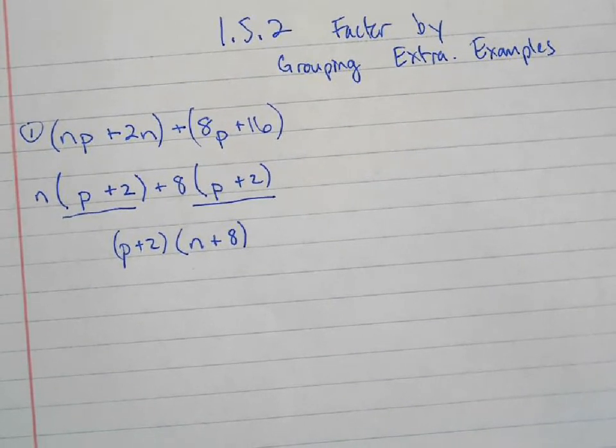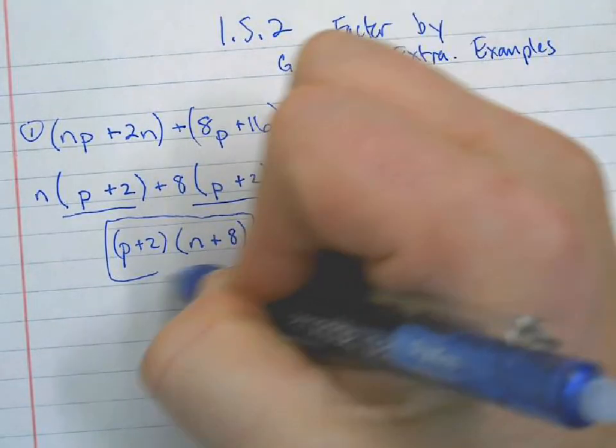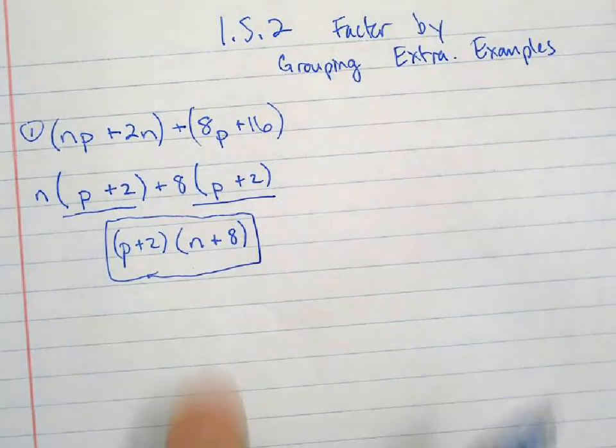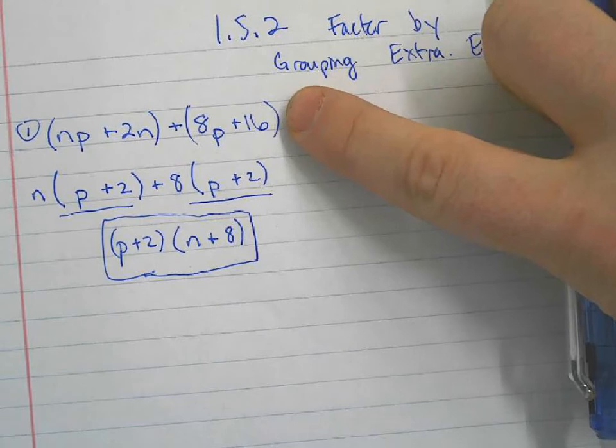Are there any questions about that? That's the answer. This is factor by grouping, because if we distributed, if we did all our rainbows, we'd get back to our original problem.